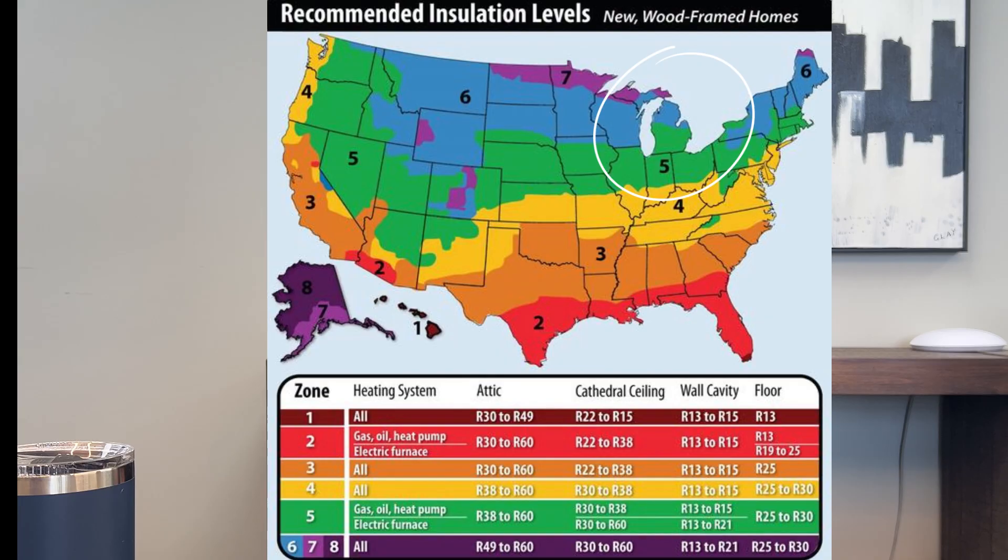According to building code today, depending on what zone or region — what area you live in — Michigan is broken down into three different zones: southern, central, and northern. Building code requires an R-value, and we'll get into the R-value in a second — R-value of 49 up to 60.